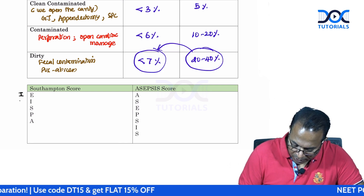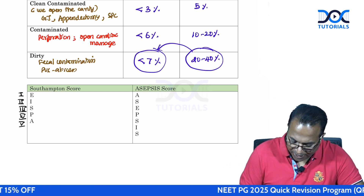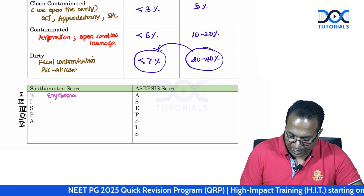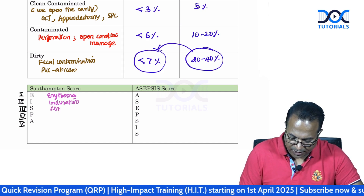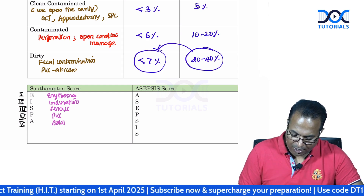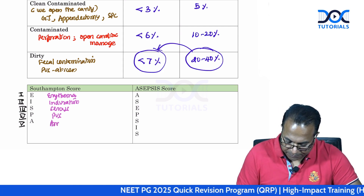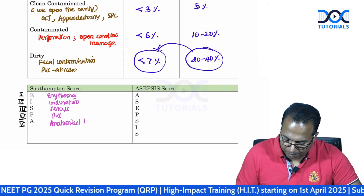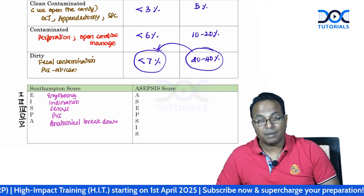Southampton score grades 1 through 5 can be remembered by the mnemonic E.I.SPA. E for erythema, I for induration of the wound, S for serous discharge from the wound, P for pus, and A for anatomical separation of the wound. Anatomical separation means burst abdomen — the wound has opened up is called anatomical separation.